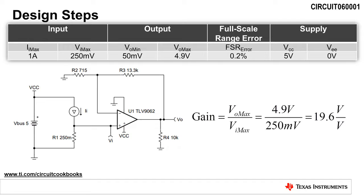The next step is to calculate the gain of the non-inverting amplifier circuit such that the maximum shunt voltage of 250 millivolts corresponds to a maximum output voltage of 4.9 volts. To do this, we divide the maximum output voltage by the maximum shunt voltage, which yields a linear gain of 19.6 volts per volt.